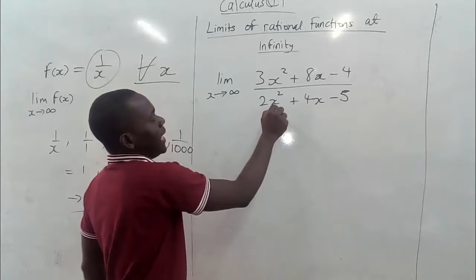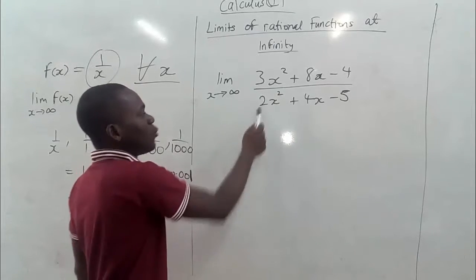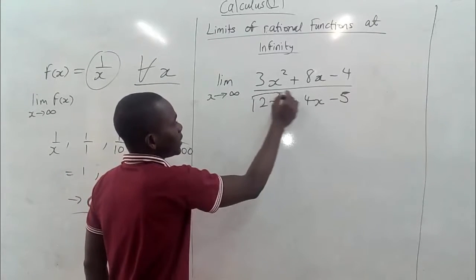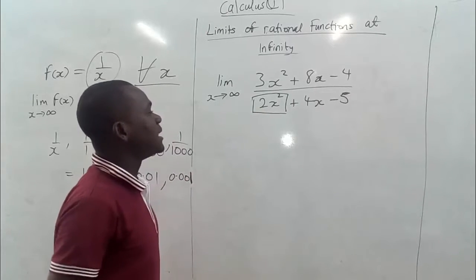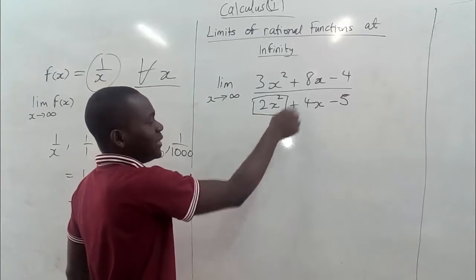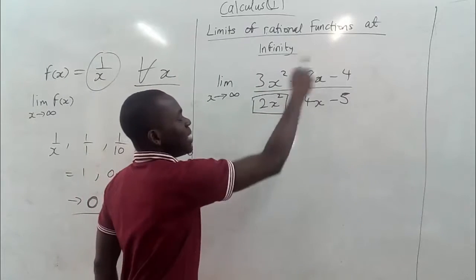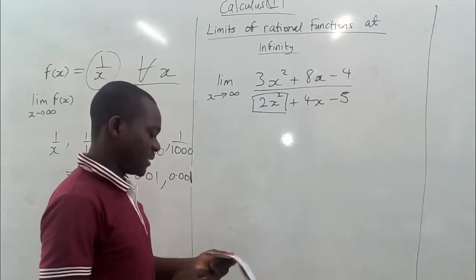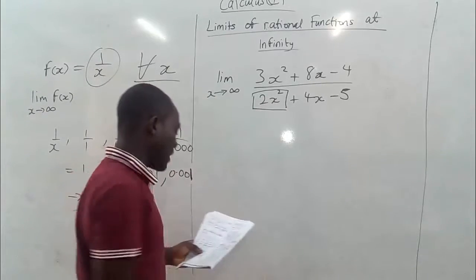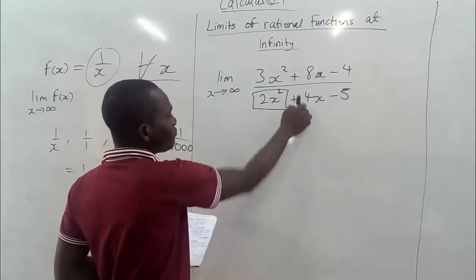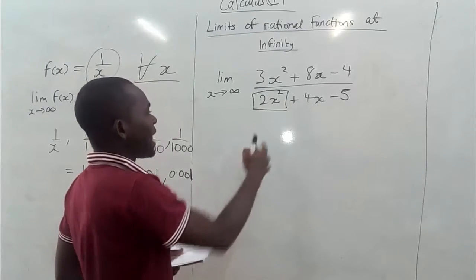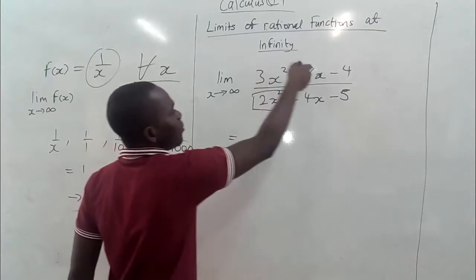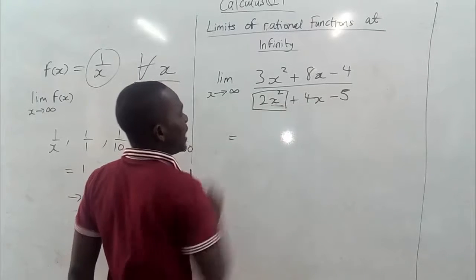In the denominator, x² is also the leading variable, with a coefficient of 2. We need to take note of the term containing the highest power of x in the denominator. Then we divide each term in the expression by that highest power — which is x².